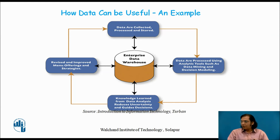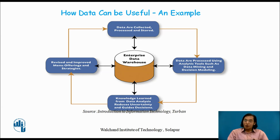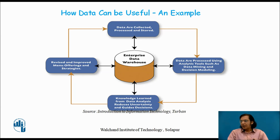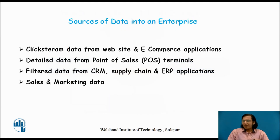Here is an example of how data can be useful. In a typical organization, data is collected, processed, and stored. After processing, the data is analyzed using data tools to get information, and that information is used for decision modeling. From the information we can derive knowledge, which is used for taking decisions, and based on that the organization can survive or pursue better business. All this data is stored in a system called an enterprise data warehouse.